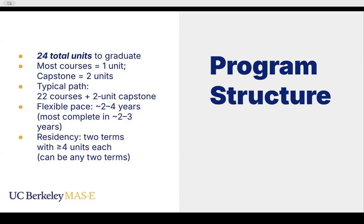The program structure itself is 24 total units to graduate. Most courses are one unit — all are one unit except for the capstone, which is two units. So there are 22 courses that you must take, each for one unit, and then there's a two-unit capstone, which adds up to 24. We provide a flexible pace — it's about a two to four year program. We calculate that most will complete in about two to three years, depending on the load you take. This runs fall, spring, and summer. If you take three to four courses per term, you're on pace to finish within three to three and a half years.